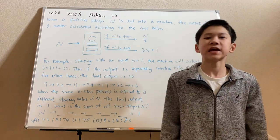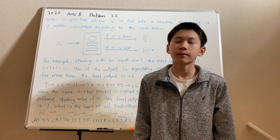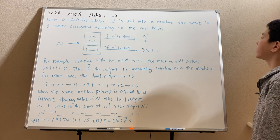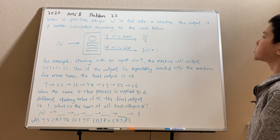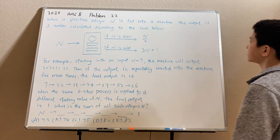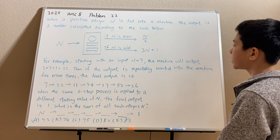Hello everybody! This is Mad Jedi V, and today we'll be attacking the 2020 AMC A problem 22. The problem reads: when a positive integer n is fed into a machine, the output is calculated according to the rule below. When a number n is inputted, if n is even, then print out n over 2. Otherwise, if n is odd, then print out 3n plus 1.